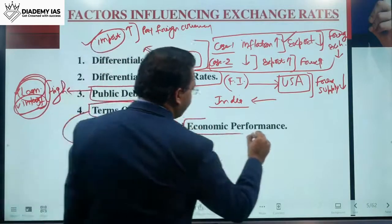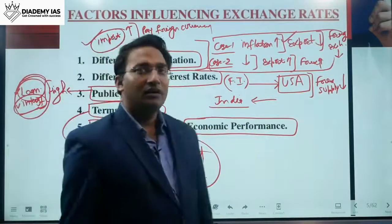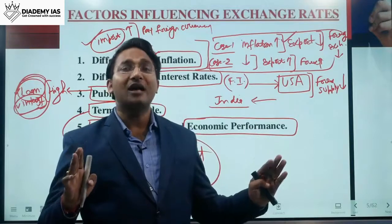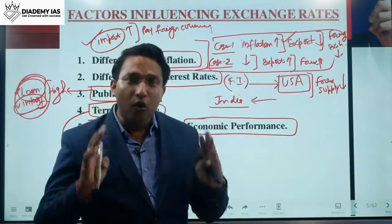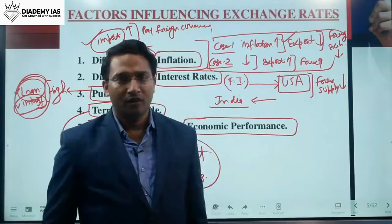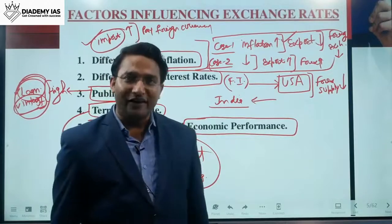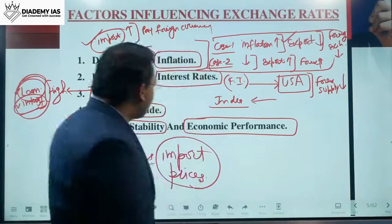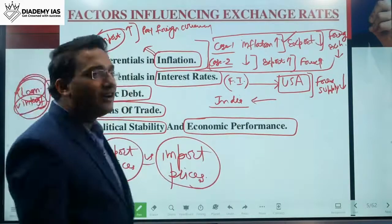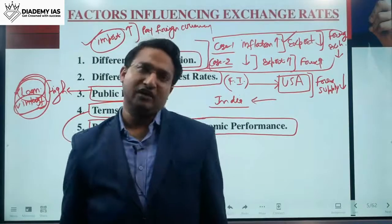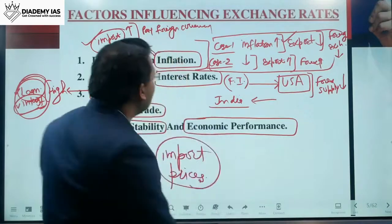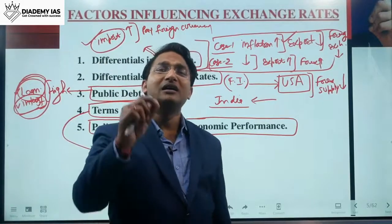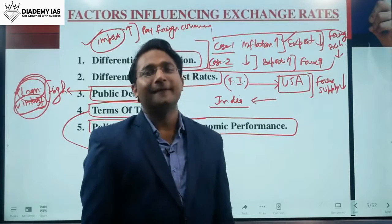The next factor is economic performance. Comparing China and India, China's economic performance is much better. So China will attract more foreign exchange, and China's domestic currency will appreciate. Political stability and economic performance both impact the demand and supply of foreign currency. All five factors are responsible for changes in demand and supply, which ultimately impact the exchange rate.